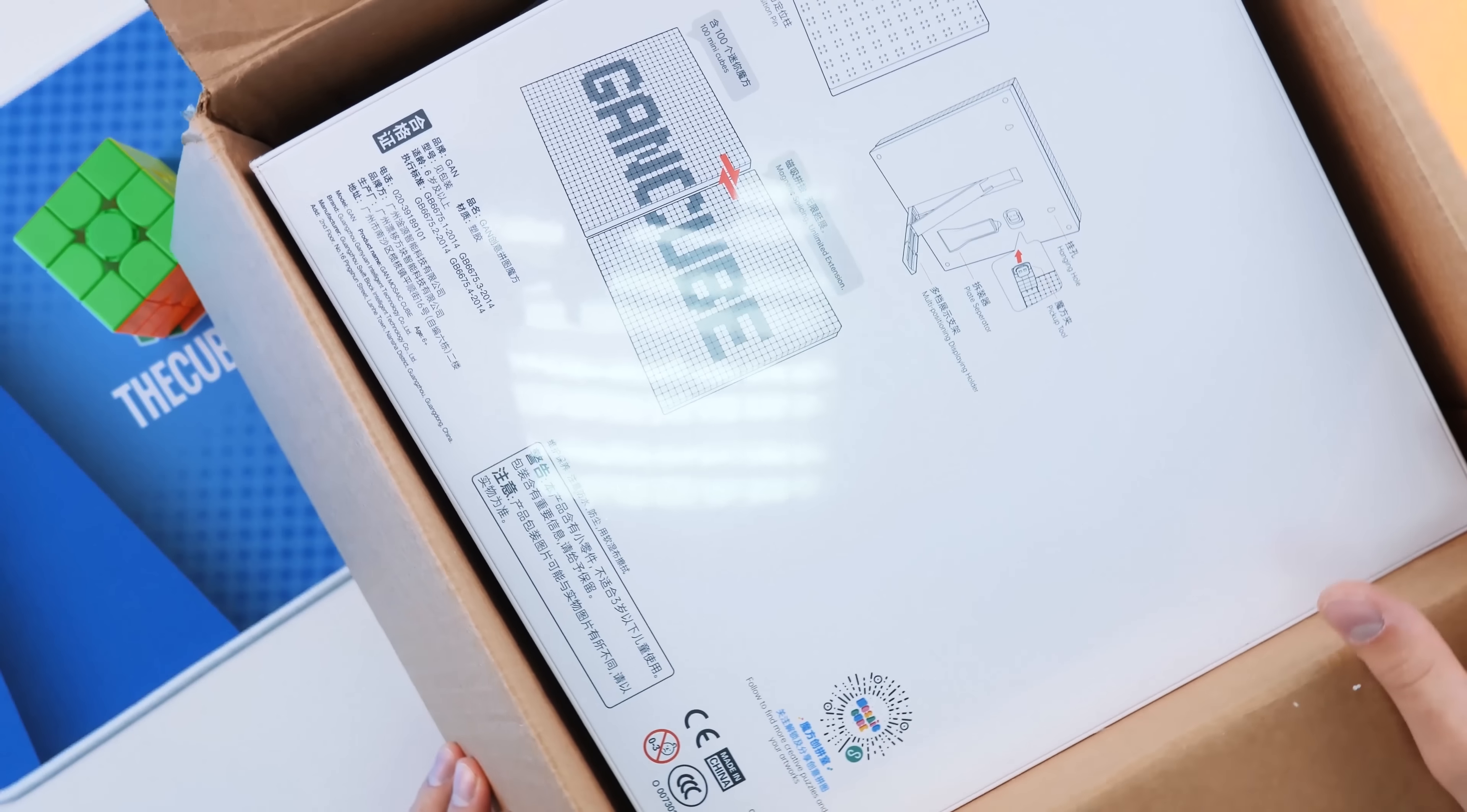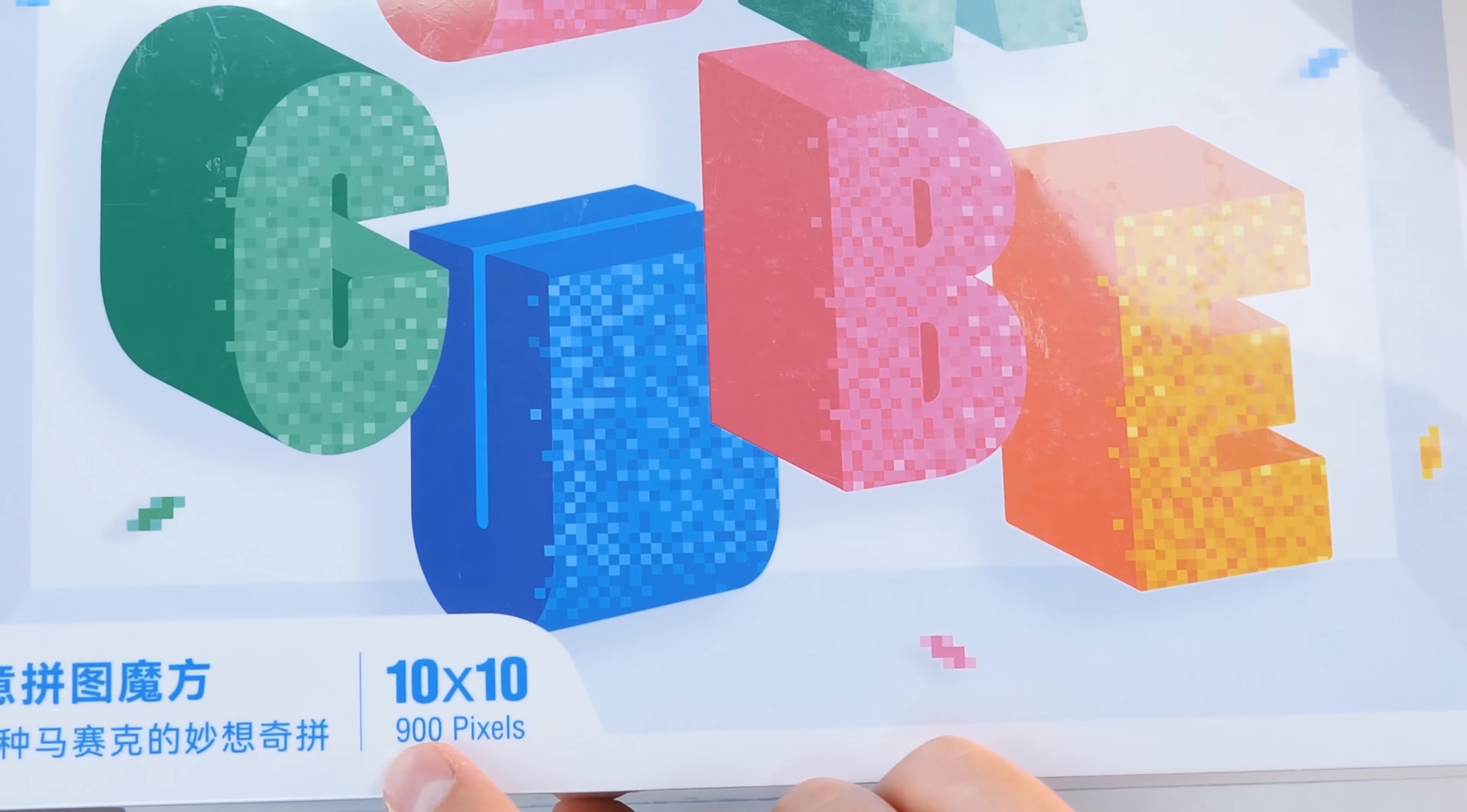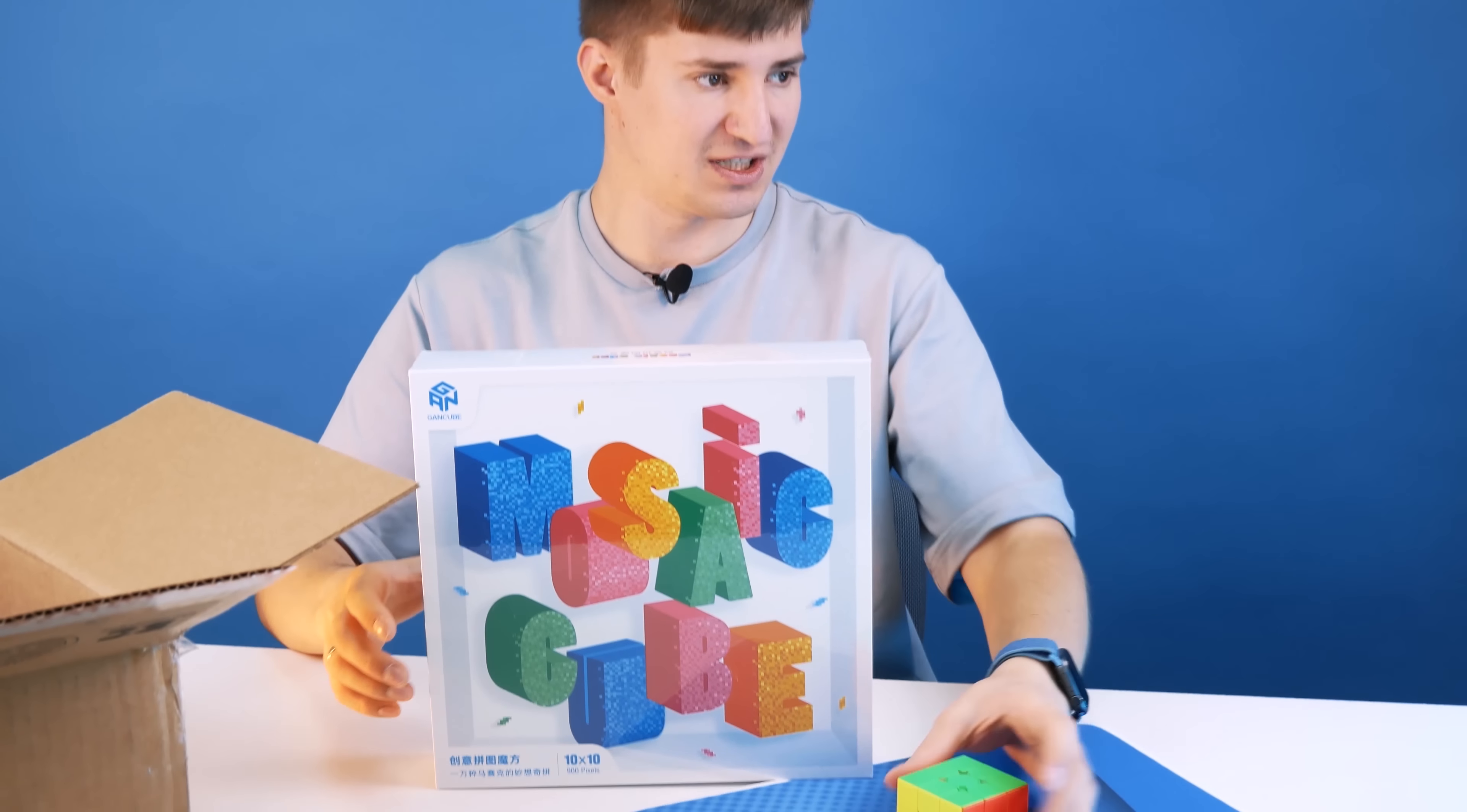It says GenCube. I wonder what it is. I've seen this thing. God, it's heavy. It's a mosaic cube, 10 by 10, 900 pixels. GenCube made these square blocks out of cubes, so people could do a mosaic of them. And here's one frame of 10 cubes by 10 cubes.